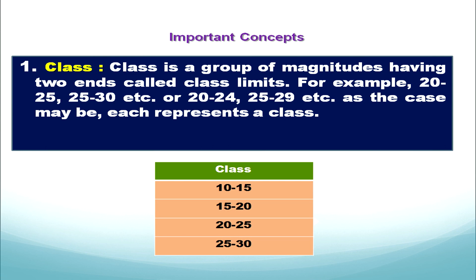Let's start with the very first concept: class. What is a class? A class is a group of magnitudes having two ends called class limits. In this example you can see different classes — class 1 is 10 to 15, the next class is 15 to 20. In both cases we have two ends.